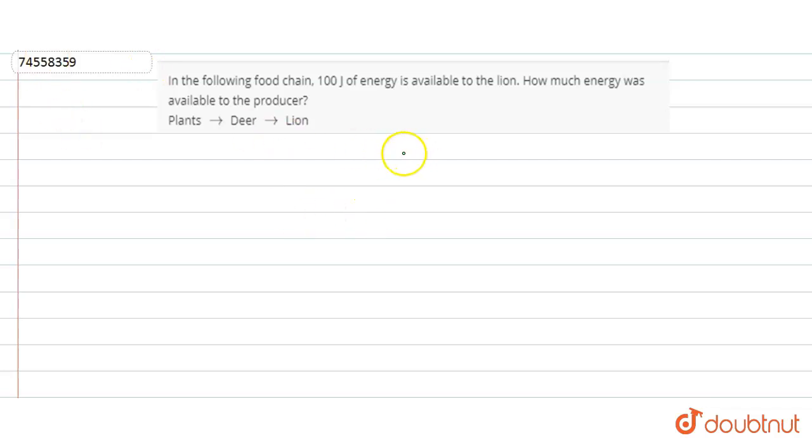Hello everyone, our today's question is: in the following food chain, 100 joules of energy is available to the lion, how much energy was available to the producer?